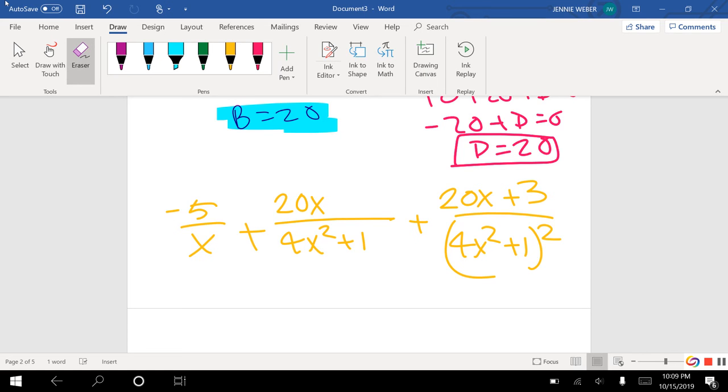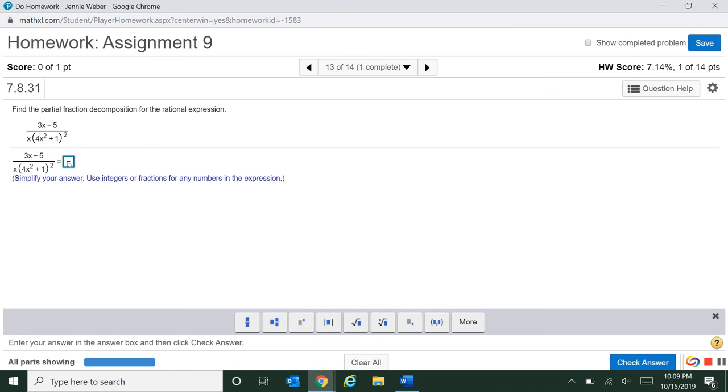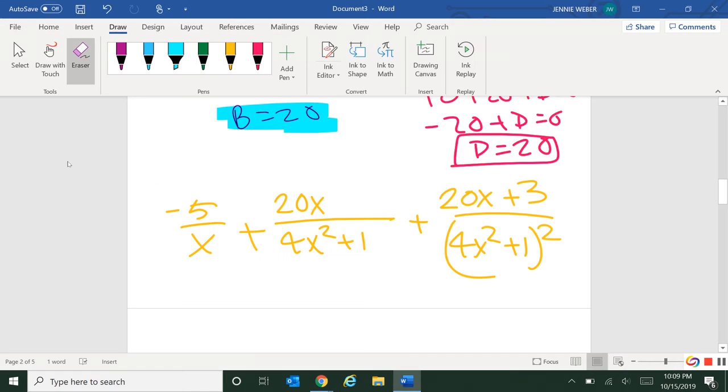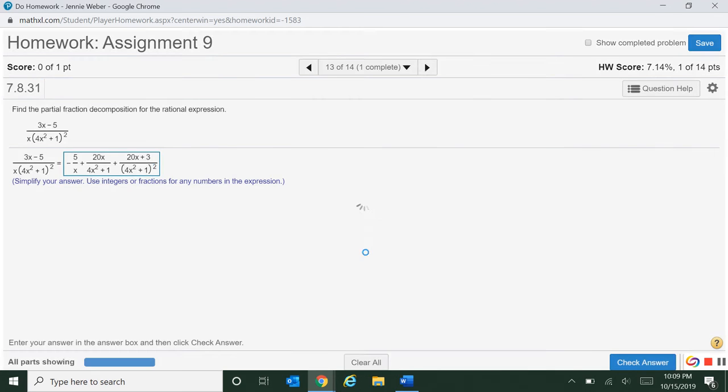So hopefully, we've got this all neatly worked out. So negative 5 over x plus 20x over 4x squared plus 1, plus 20x plus 3 over 4x squared plus 1 squared.